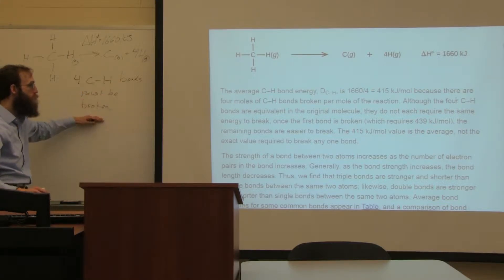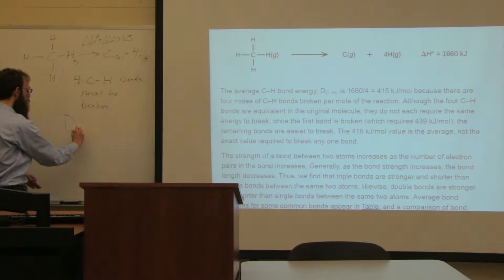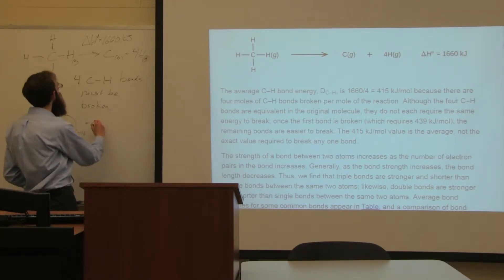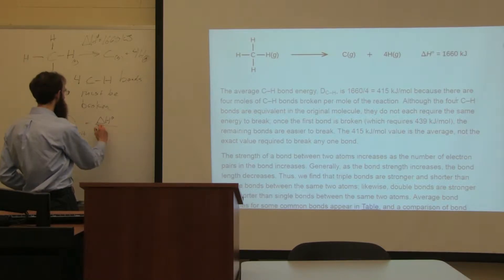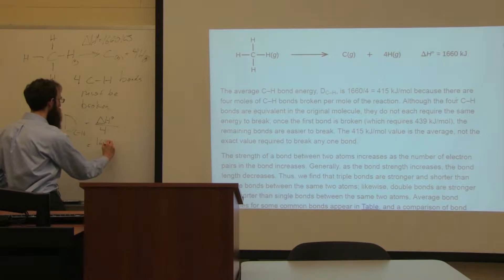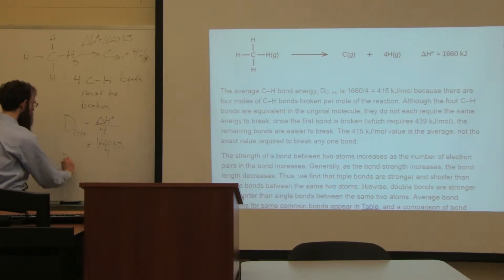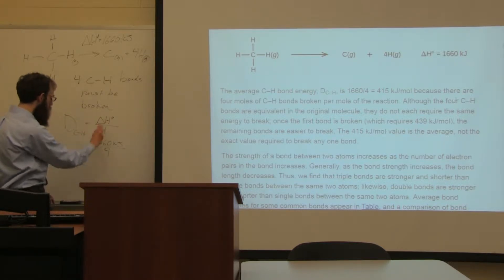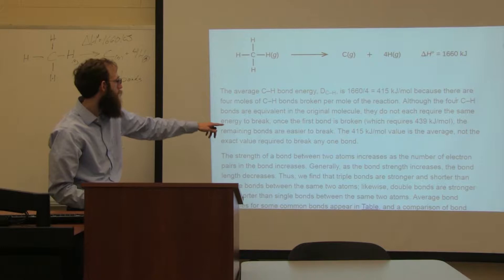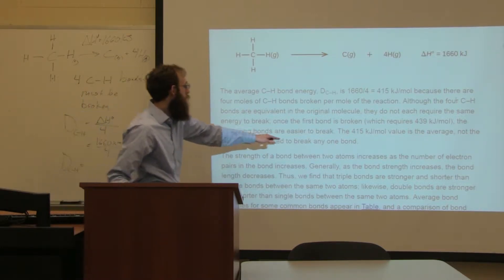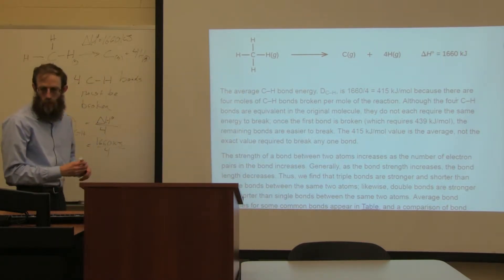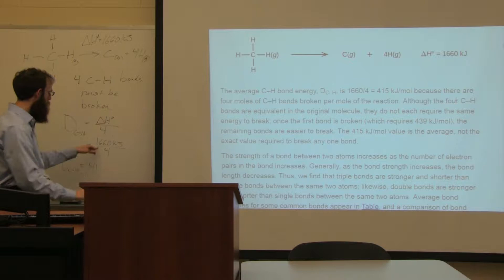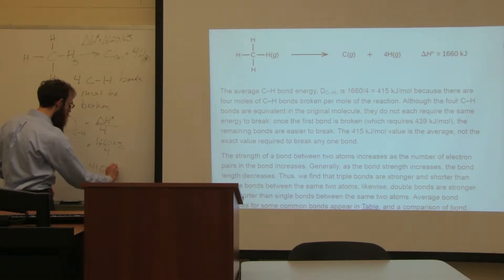Four carbon-hydrogen bonds must be broken, so the bond energy for one carbon-hydrogen bond equals ΔH° divided by four: 1,660 kilojoules divided by four equals 415 kilojoules. So D(C-H) — the bond dissociation energy for a carbon-hydrogen bond — is 415 kilojoules per mole.